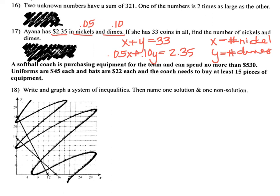All right, this next question, this last question is actually talking about an inequality, which we haven't spent a ton of time on, but you might see tomorrow on your test, if nothing else, in an extra credit question. So it says the softball coach is purchasing equipment for the team. He can spend no more than, so that's less than or equal to $530. Uniforms are 45 each and bats are 22 each.